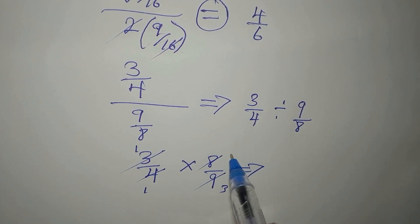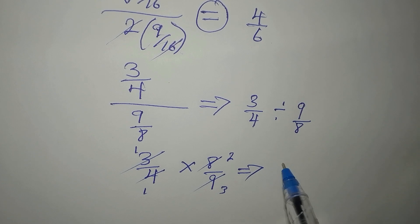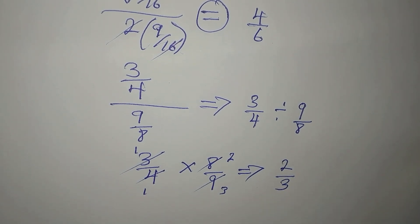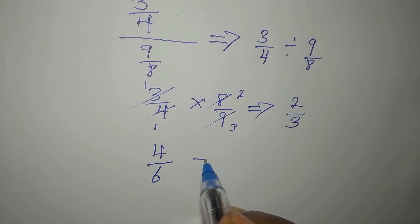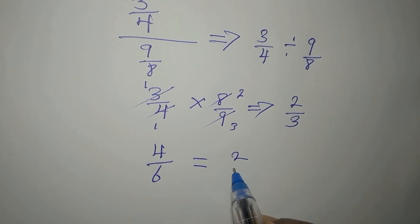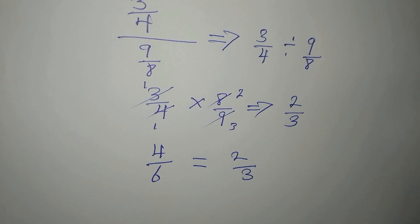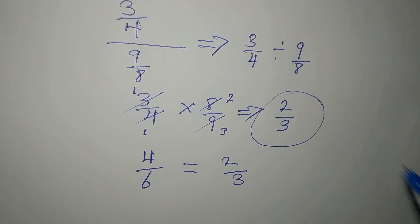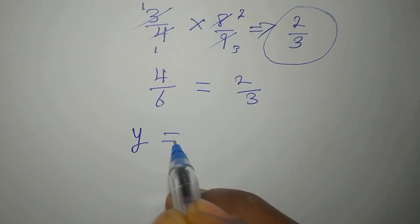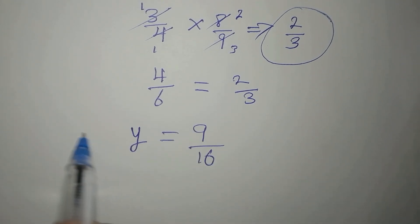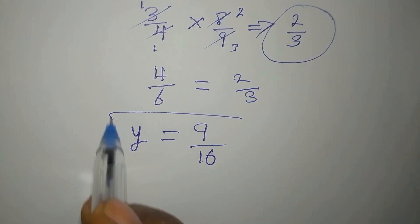Simplifying: 8 divided by 4 gives 2, and 3 divided by 9 gives 1 over 3, so we get 2 over 3. Since 4 over 6 reduces to 2 over 3, both sides match. Therefore the only valid solution is y equals 9 over 16.